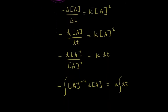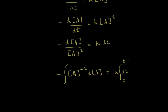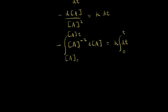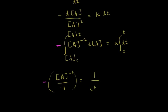So we're integrating from zero to T on the right, and from our initial concentration to our concentration at time T on the left. On the left side, the integral of [A] to the negative two d[A] gives us the concentration of A to the negative first over negative one. We still have our negative sign, so with two negatives we get a positive — this becomes one over the concentration of A, since A to the negative first is one over [A]. We evaluate this from our initial concentration to our concentration at time T.